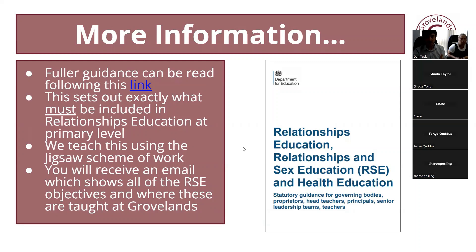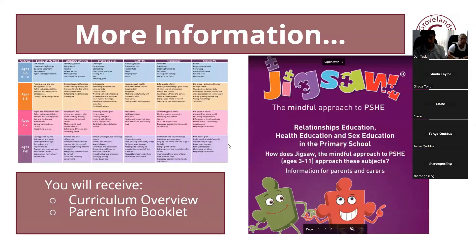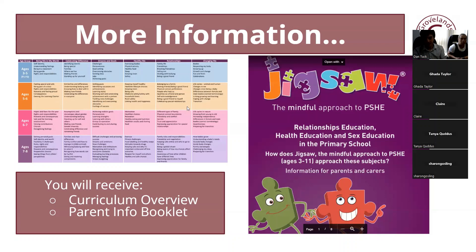We'll also send out the Jigsaw scheme of work so you can see in more detail what is taught across the school. Jigsaw is our scheme for teaching PSHE. By having this scheme, it means we've got real consistency throughout the school and we know there is progression from year one through to year six. Everything is age appropriate because the resources are all set out for the teachers. We're going to send out a booklet with information about Jigsaw and an overview showing all the learning children do across the school year.